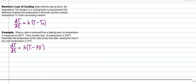So our differential equation is dT/dt equal to k times (T minus 70). This will be our initial formula for solving this problem.